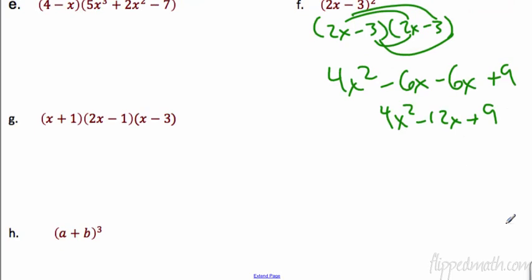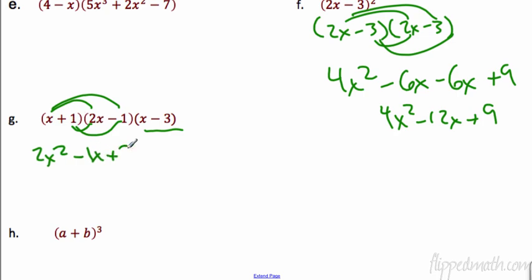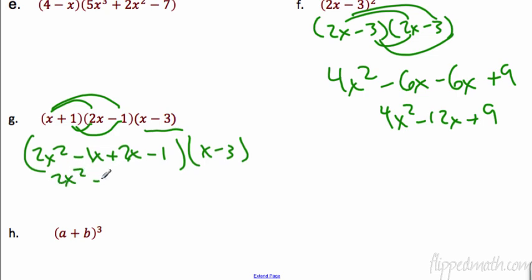Example g is a little bit tricky because we have two steps. What I'm going to do is double distribute the first two binomials, and that x minus 3 is just going to hang out for a second. When I multiply the first two terms together, I get 2x squared. On the outside I get minus 1x, on the inside I get positive 2x, and then minus 1. When I simplify, that gives me 2x squared plus 1x minus 1, and that's still going to be times x minus 3.